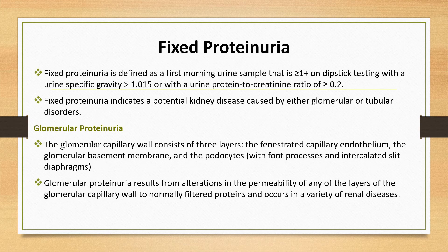The third type is fixed proteinuria. Children found to have fixed proteinuria on the first morning urine sample on three separate occasions should be further investigated. Fixed proteinuria is defined as a first morning urine sample that is ≥+1 on dipstick testing with a urine specific gravity greater than 1.015, or with a urine protein to creatinine ratio of ≥0.2. Fixed proteinuria indicates potential kidney disease caused by either glomerular or tubular disorders.